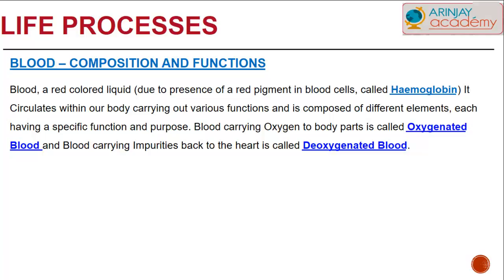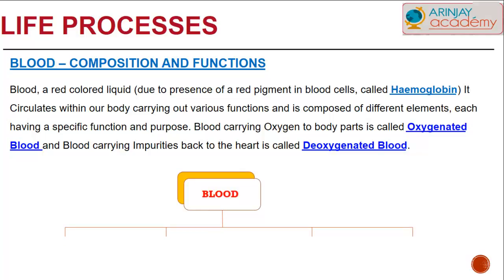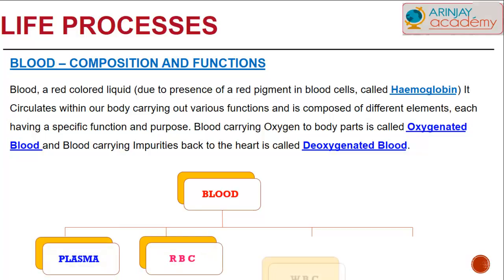Blood that carries oxygen to all the other parts of the body from the heart is called oxygenated blood, and blood that carries back impurities to the heart is called deoxygenated blood. So let's have a look at the composition of blood: we have plasma, red blood cells, white blood cells, and platelets.